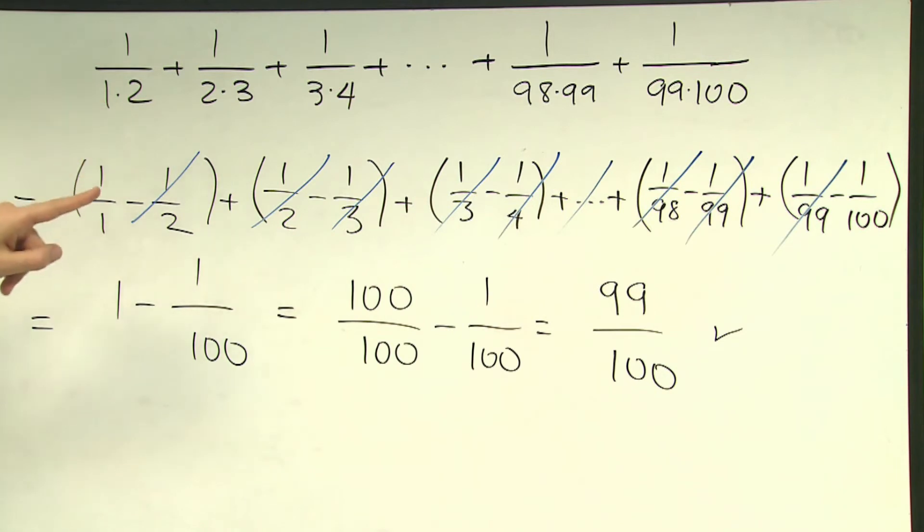1 divided by 1 times 2 can be written as 1 over 1 minus 1 over 2. Where in the second fraction, 1 divided by 2 times 3 can be written as 1 over 2 minus 1 over 3. Just check it out.